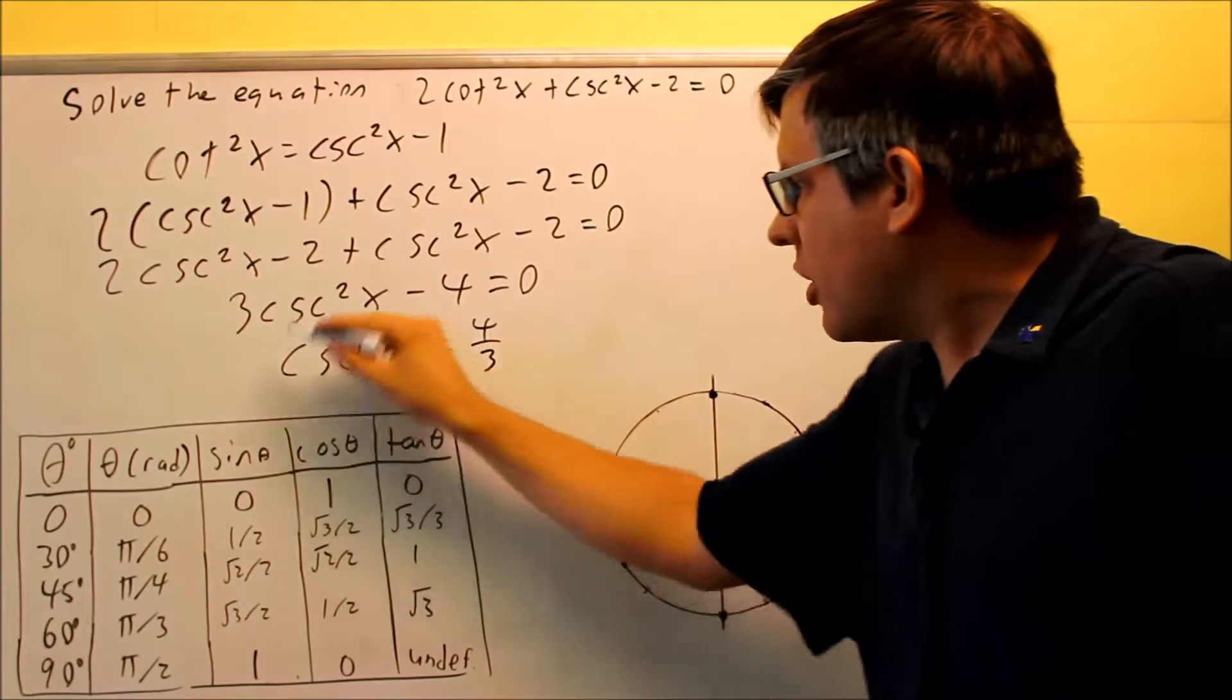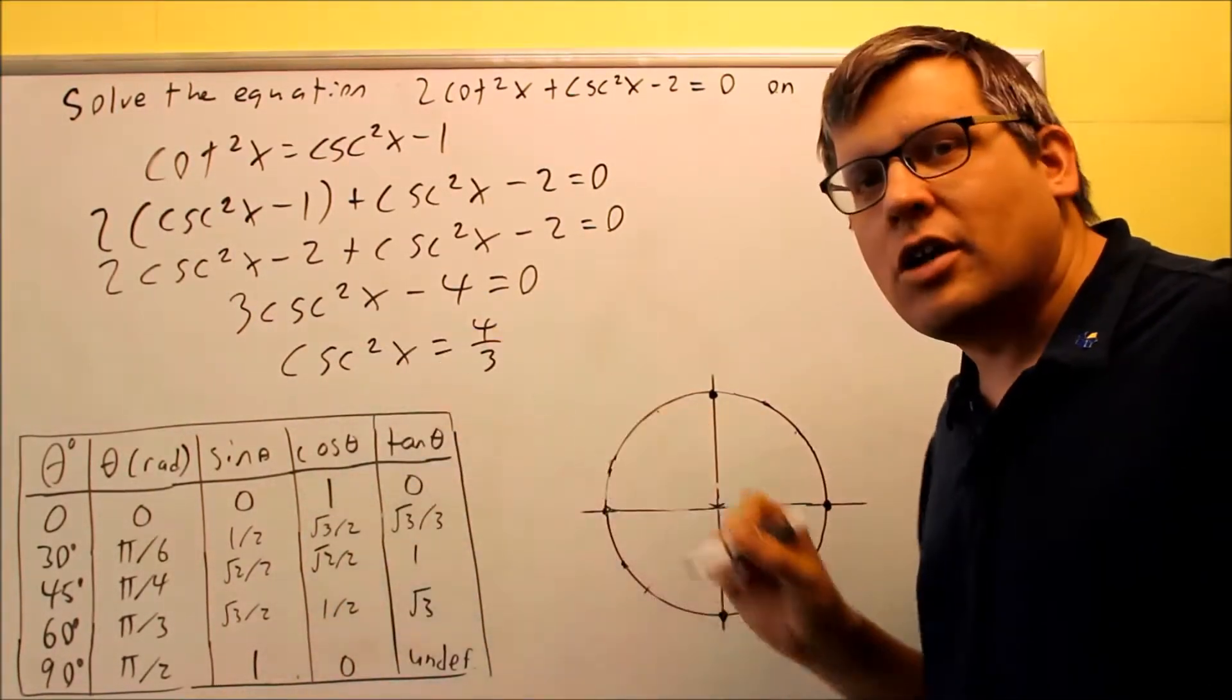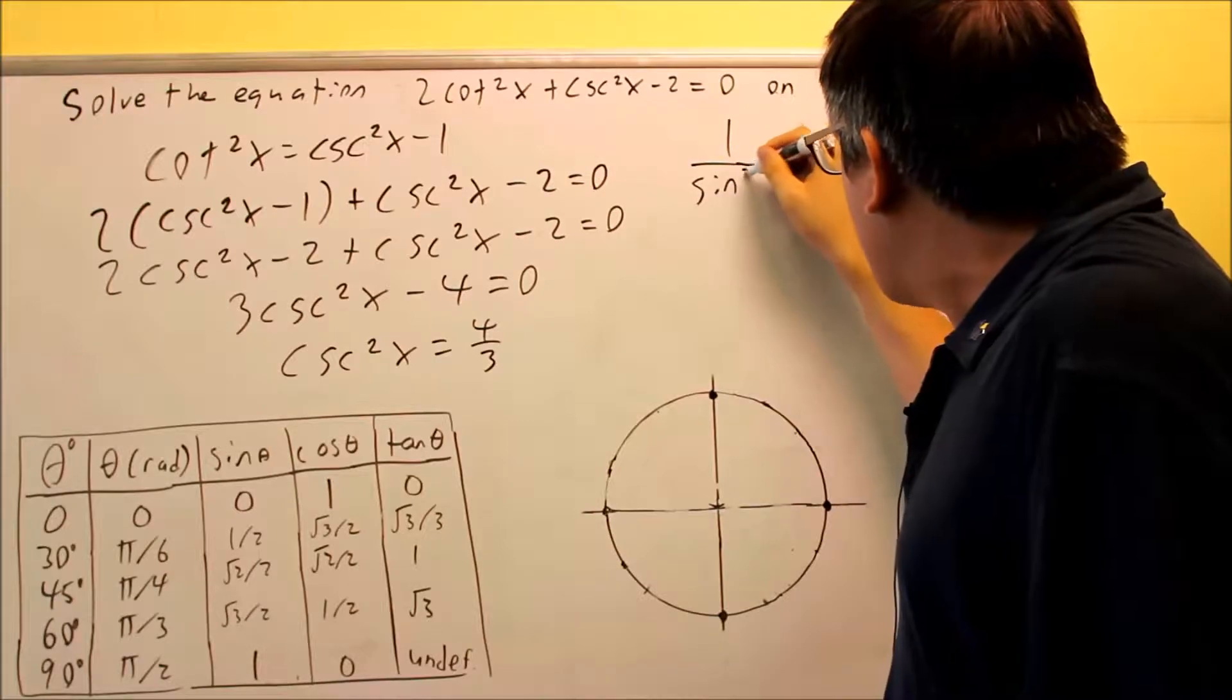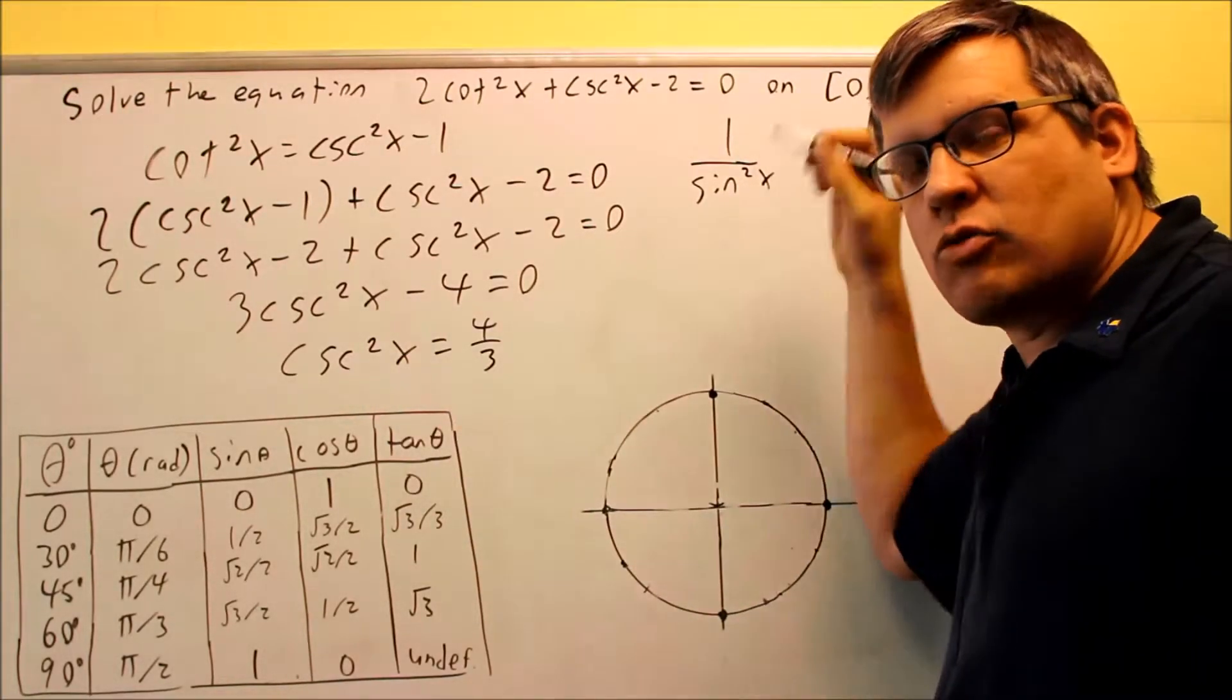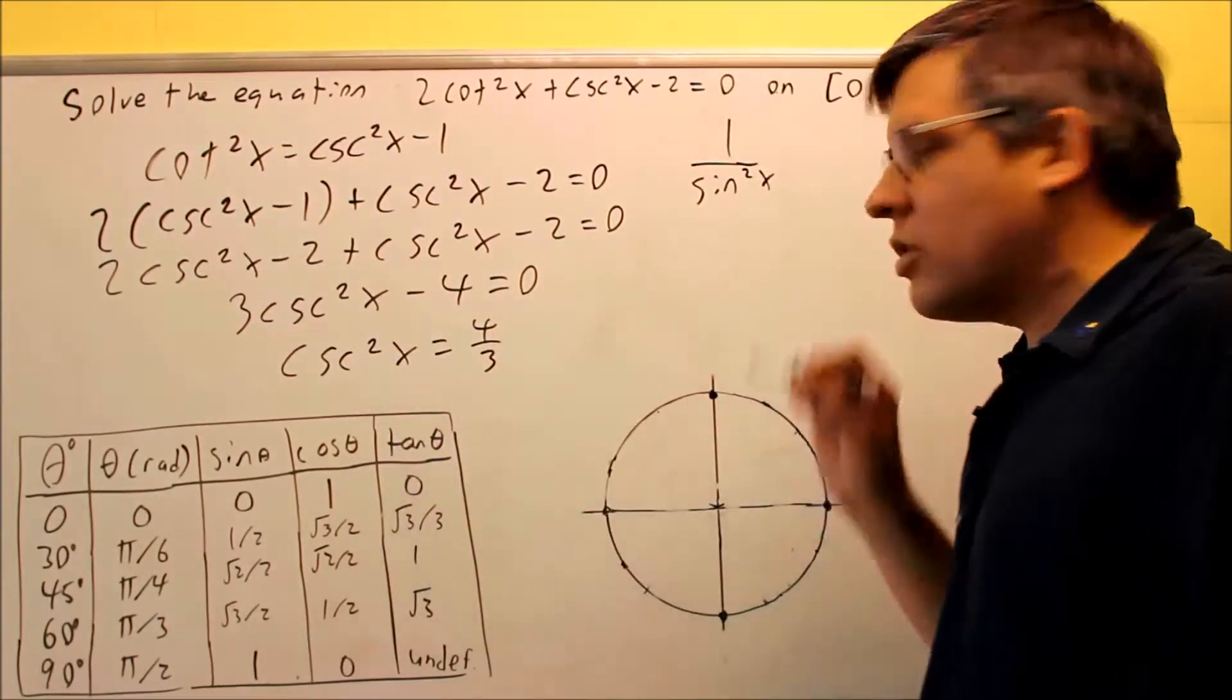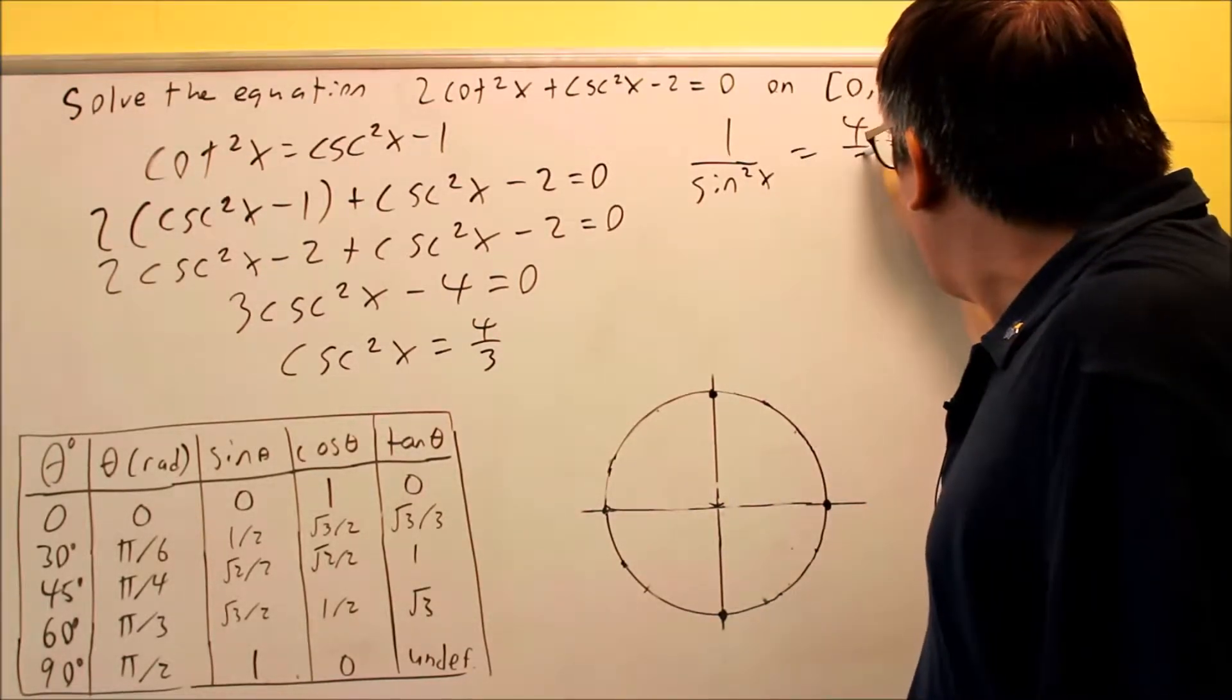Instead of cosecant squared I want to change it into a sine because that's what I have on my table, so I've got to put an identity for cosecant. Cosecant is going to be 1 over sine. Because you have a square here you have to make sure you put square in down there. Those reciprocal identities will still work for multiple powers. This equals 4 thirds.